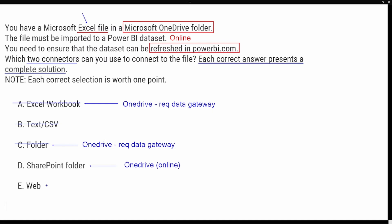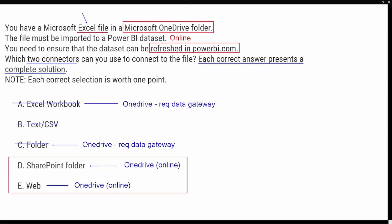Looking at our last option — the web connector asks us for a URL, so we can paste in that OneDrive URL and directly connect into that Excel file. This being online means we do not have to set up a data gateway; it is going to refresh as we schedule it, so no additional requirements are needed. For this question, the two correct options — SharePoint folder and the web connector — are the complete solution because they do not require a data gateway to be refreshed inside the Power BI service.